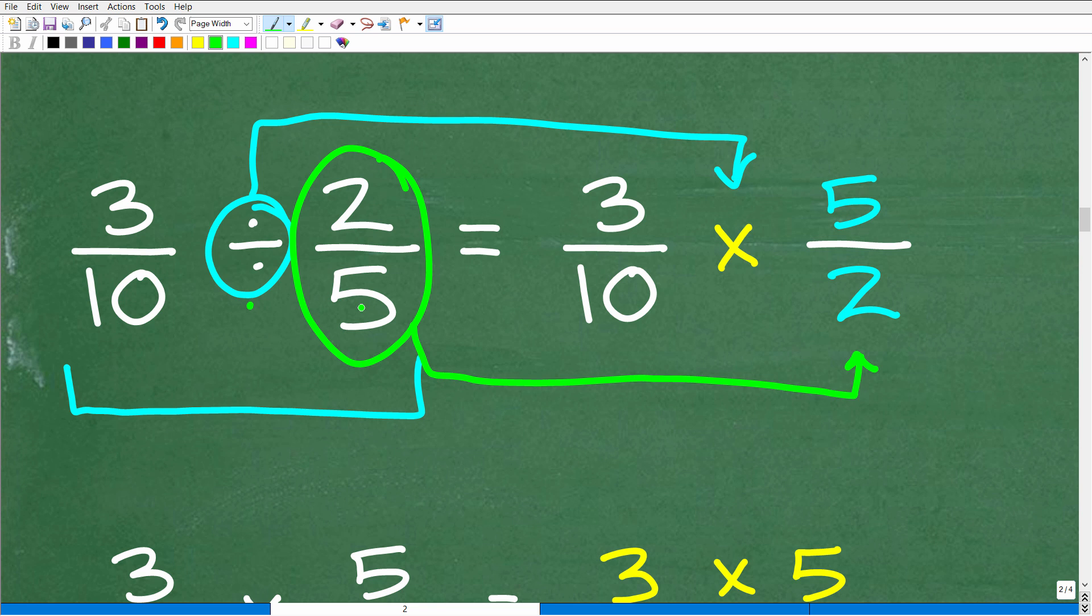So here we have 2/5. We're going to flip it upside down. That's 5 over 2. But when we flip it upside down, we get to change this division operator to multiplication. So just make sure you understand we're going from division to multiplication. And the way we do that is to flip the fraction that's to the right of the division symbol. Never the one to the front. That one stays the same. The one to the right, we're going to flip it upside down.